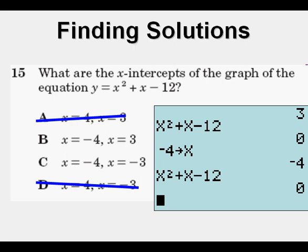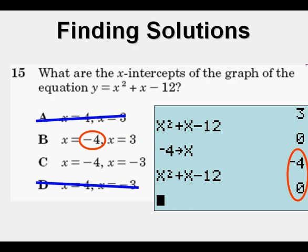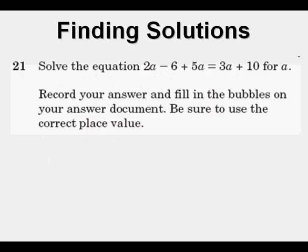I eliminated choices A and D, so we're down to choice B. I stored 3 to x, entered x² + x - 12, and found it equal to zero. Then I stored -4 to x and entered x² + x - 12 — that also equals zero. So B is our correct answer.